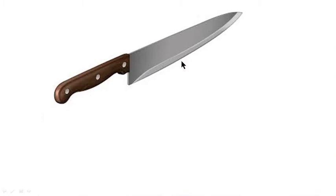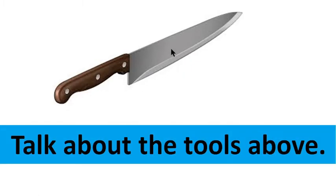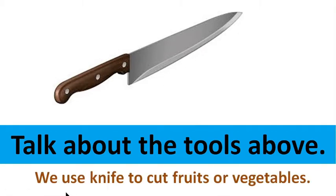This is knife. Knife is made of iron and plastic. The handle is made of plastic or wood. We use knife to cut fruits or vegetables.